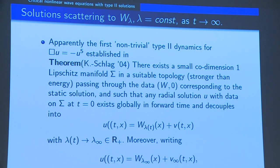At that point, Schlag and myself were thinking: maybe we can depart from W, the static solution, and try to understand its stability. We do this very naively by simply adding a perturbation. You get a wave equation for this perturbation, and you try to understand whether you can control that solution.